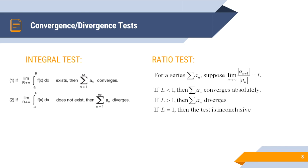The next test is the integral test. You take the integral of the series — it's an improper integral, so we're finding the integral of the series as it approaches infinity. If the integral exists and gives a finite number, then the series converges. If the integral does not exist and diverges, then the original series also diverges.